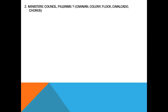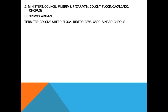What is the group of pilgrims? Options: caravan, colony, flock, cavalcade, chorus. The group of pilgrims is called caravan. The group of termites is called colony. The group of sheep is called flock. The group of horses is called cavalcade. The group of singers is called chorus.